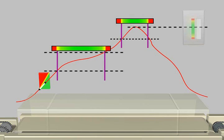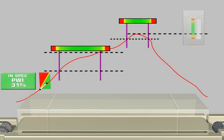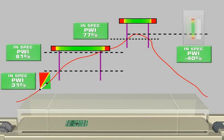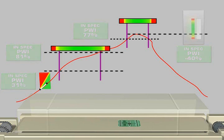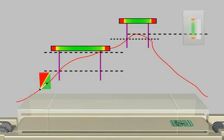As each board is profiled, each of these variables will have their own PWI values. Like a chain, your process is only as strong as its weakest link. In this case, your soak is 81%. Therefore, your overall PWI will be 81%.